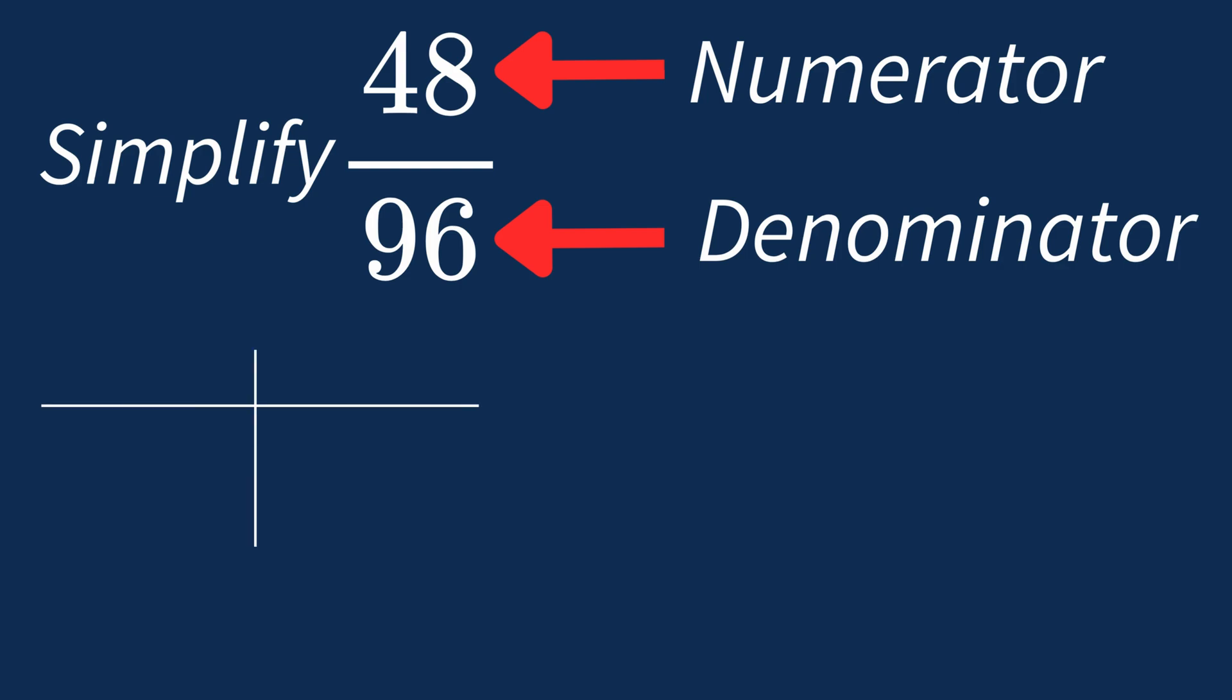First, let's list out the factors for each. For 48, the factors are 1, 2, 3, 4, 6, 8, 12, 16, and 24,